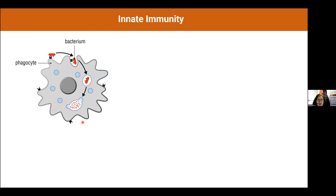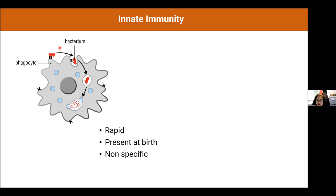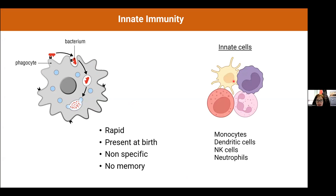The two main types of immunity are innate and adaptive. Innate immunity involves cells that take up bacteria, digest and kill them, and show pieces to the adaptive immune system. The innate immune system is very quick and present at birth, but it is not specific — innate cells recognize pathogen-associated or damage-associated molecular patterns, not specific bacteria, and there is no memory. Innate cells include monocytes, neutrophils, dendritic cells, and NK cells.